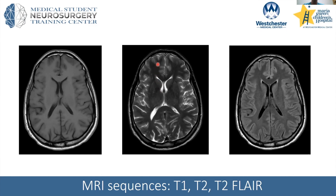On T2, everything is flipped: fluid is bright, white matter is dark, and gray matter is a little lighter. T2 is very good for showing pathology — if you're in clinic presenting a scan, pull up the T2 first as it may show pathology more clearly. T2 FLAIR is similar to T2 except the fluid signal is inverted, so CSF is dark. This is useful in conditions like multiple sclerosis, where lesions near the ventricle are better contrasted when the ventricles are dark rather than bright.